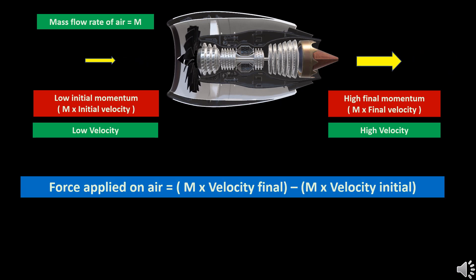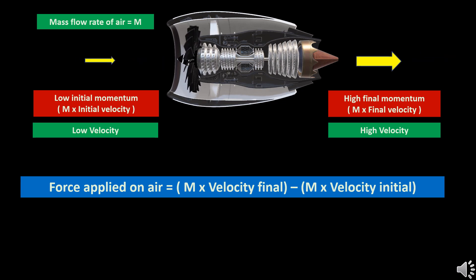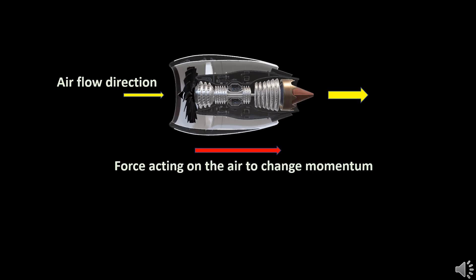This force applied on the air is given by F equals mass times velocity final minus mass times velocity initial. The direction of the applied force is in the direction of flow of air, or in the direction of increase of momentum.